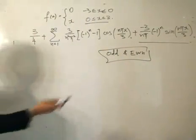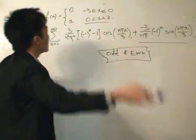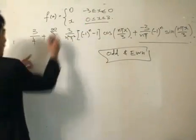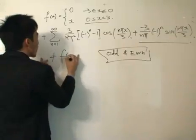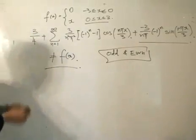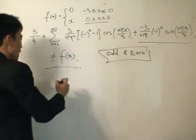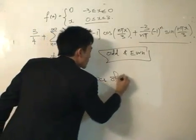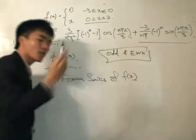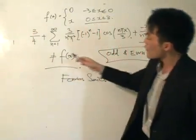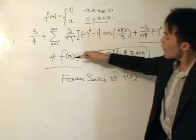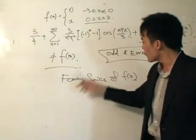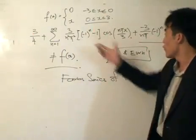That is our Fourier series for a function defined from minus L to L — in this case, -3 to 3. We must be careful not to write the series as equal to f(x) outright. Remember, we are always seeking a Fourier series of f(x), not claiming f(x) equals the series. f(x) may equal the series under certain conditions which we will find in due course.